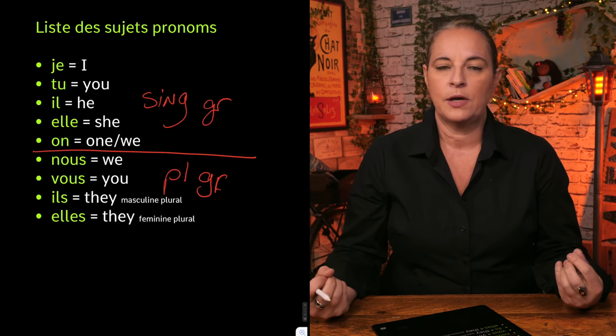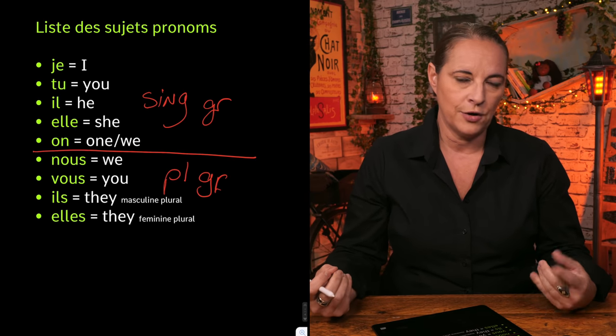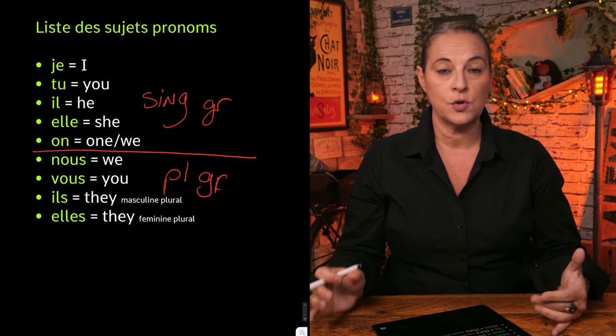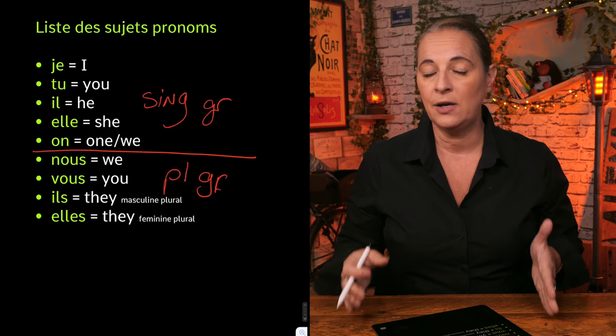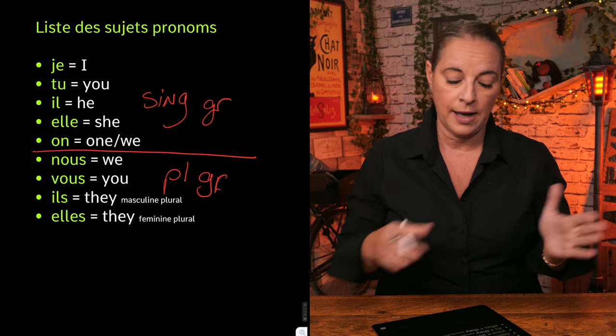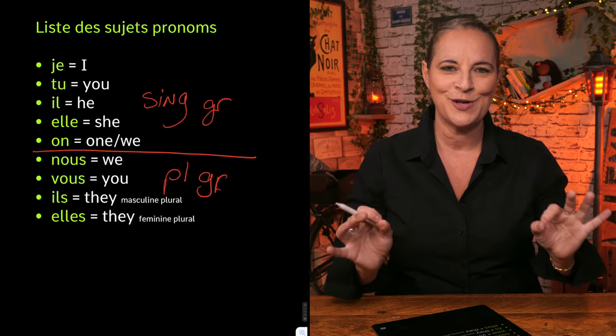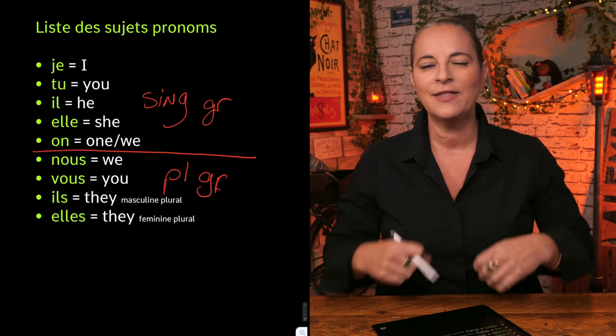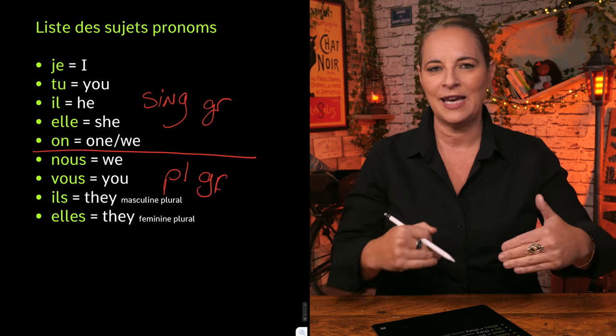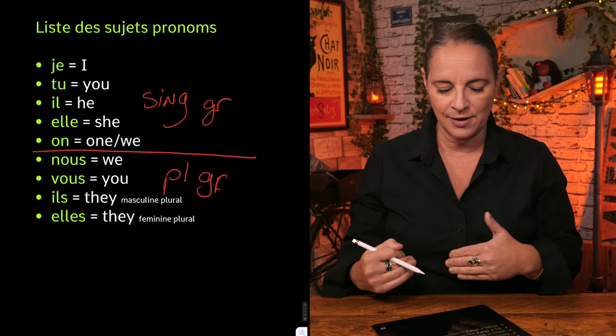In France, when you're a child, you learn this order: je, tu, il, elle, on — and then nous, vous, ils, elles. So we split into a singular group and a plural group.